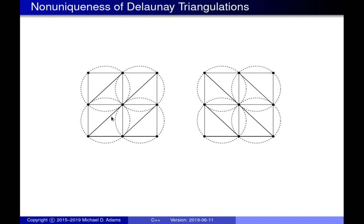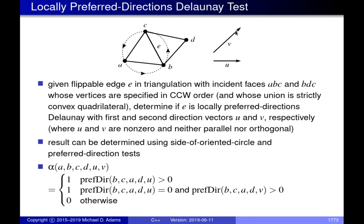Going back to the predicate, vectors u and v define a preferred orientation for the edge we choose when we have freedom between an edge and its flipped version. In this case, the flipped version of E corresponds to the edge from A to D, which is the other diagonal of the quadrilateral formed by the union of the two incident faces on E.